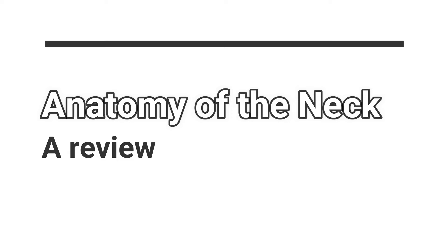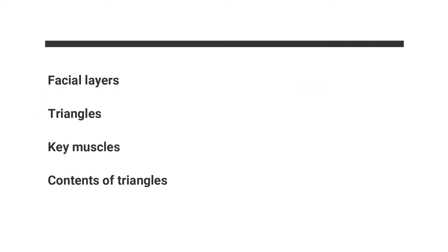In this short video, we'll have a quick review of the anatomy of the neck, which we met in our first dissection. We'll review the fascial layers that surround the neck, the key triangles formed by certain muscles and what those muscles are, and remind ourselves of the contents of those triangles.